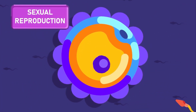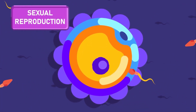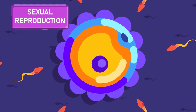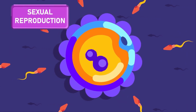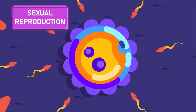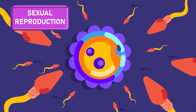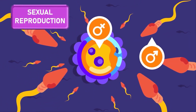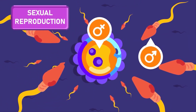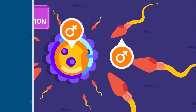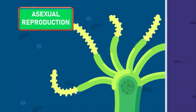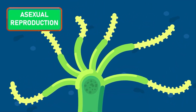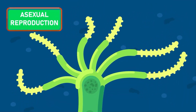Sexual reproduction is reproduction that involves the fusion of two reproductive cells or gametes. Gametes are sex cells, specifically produced by organisms for sexual reproduction. Gametes can be male or female, depending on the type of cells they produce. These are not needed in the case of asexual reproduction, as there are no male and female structures involved in this process.